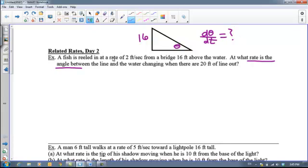On top of that I know the fish is being reeled in at a rate of 2 feet per second, that means that dx dt, where x is right here, dx dt is negative 2, it's being reeled in, the x coordinate is decreasing.